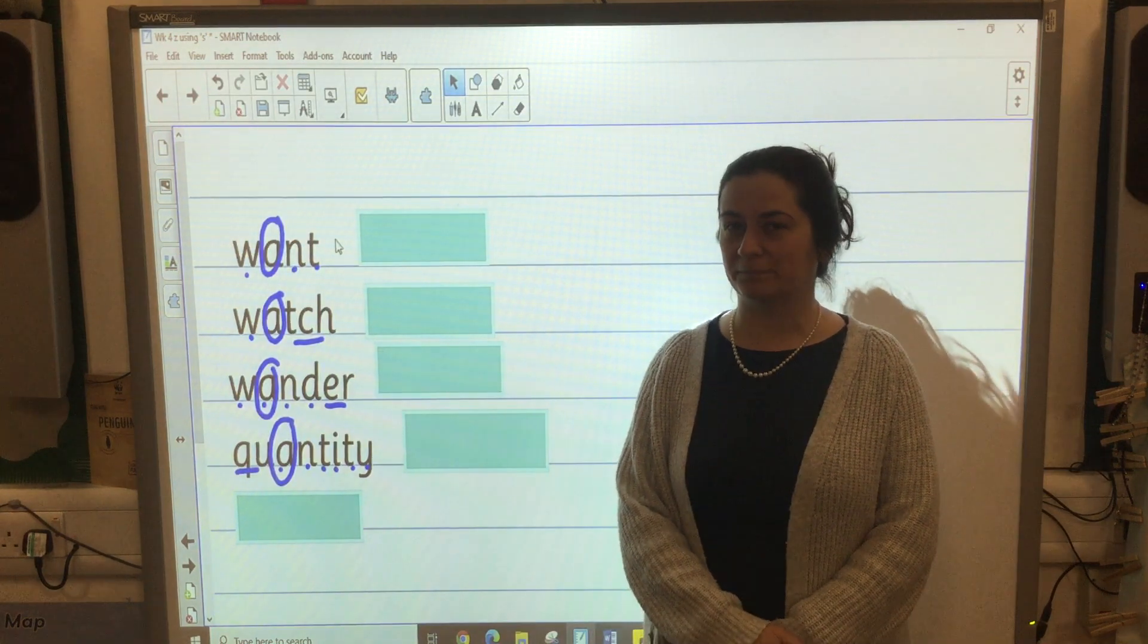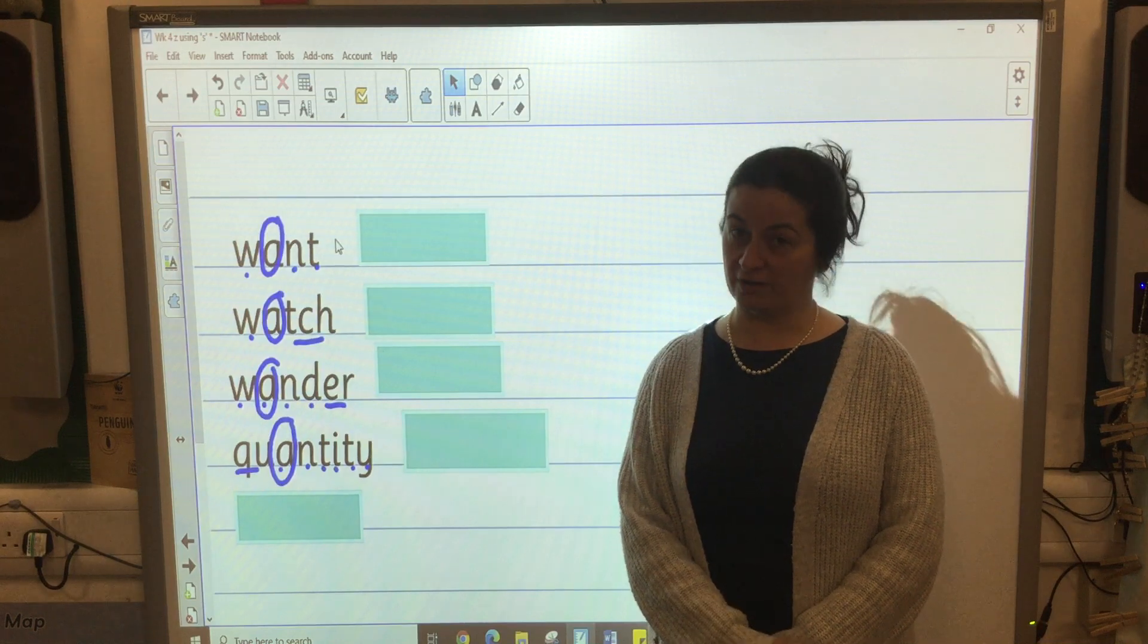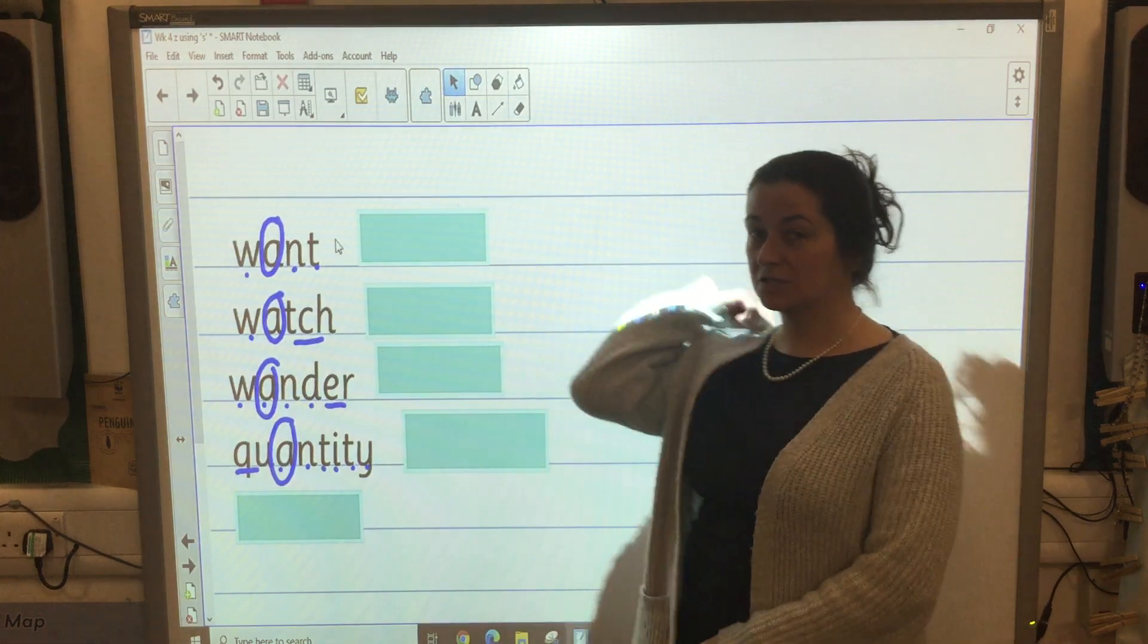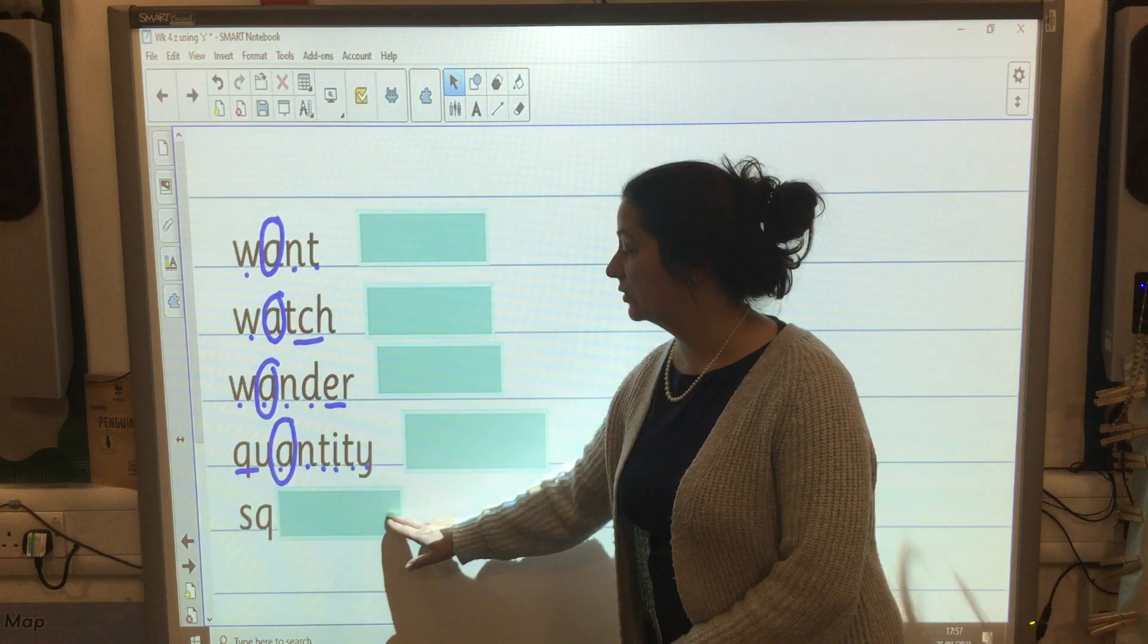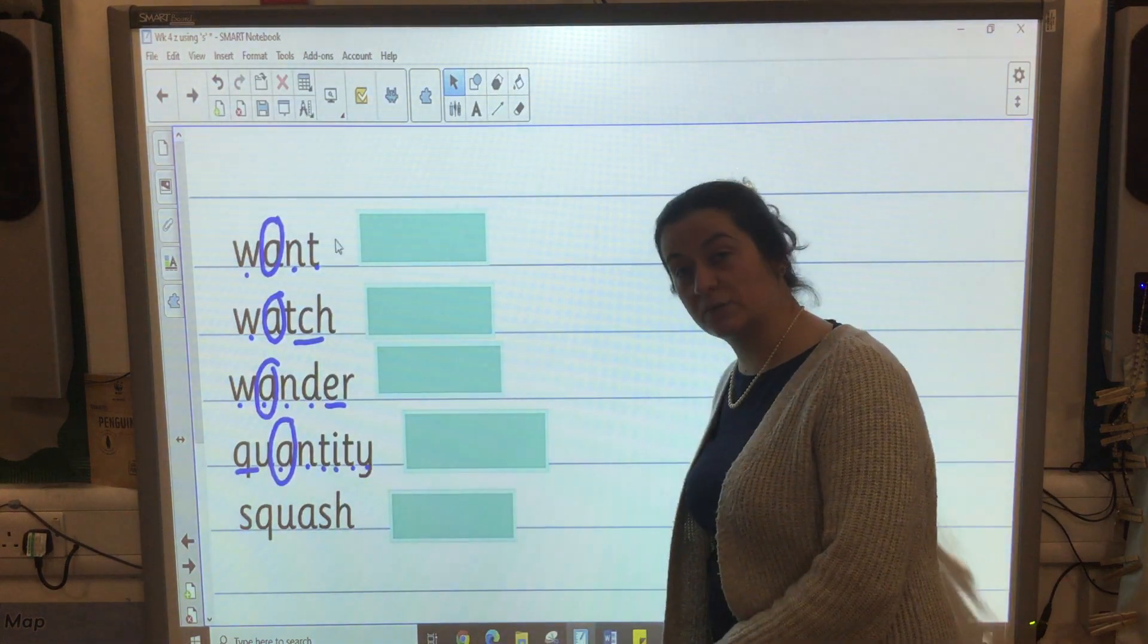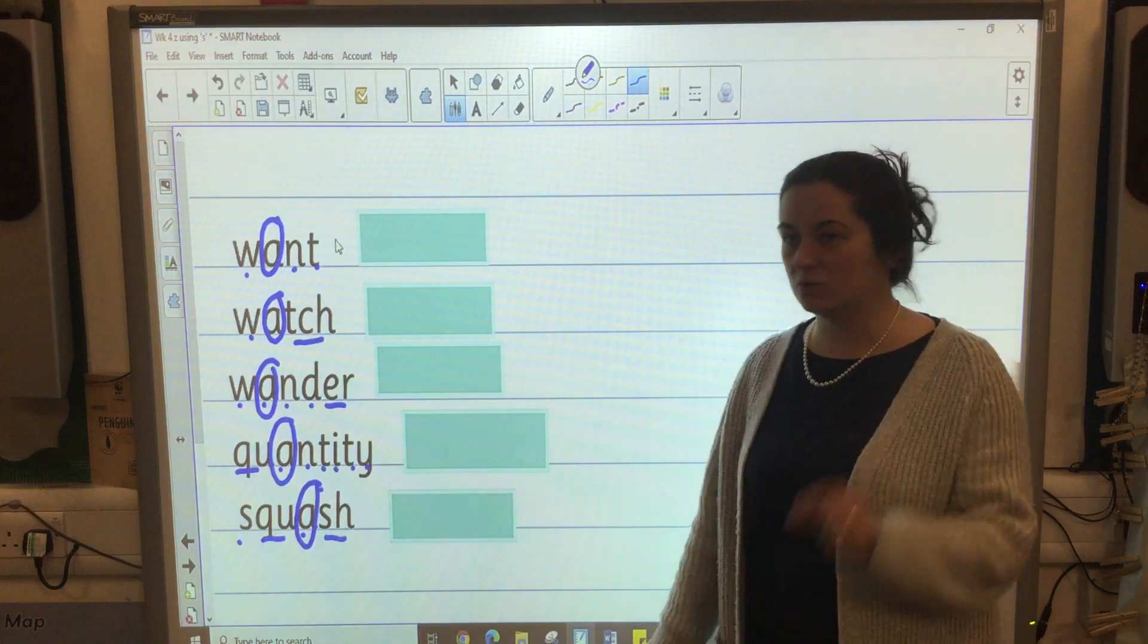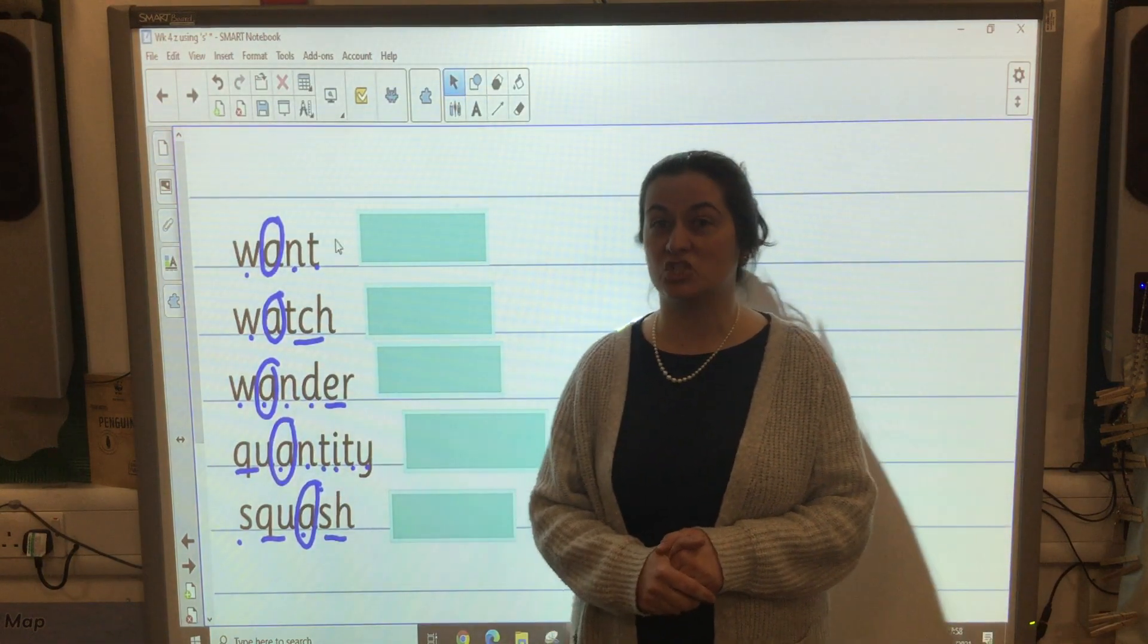So let's see if you can get the last one. Squash. I like to drink orange squash but lemon squash is my favorite. Squash. Check and change. S-q-u-a-s-h. Let's double check with the sound buttons. And there it is. But it's not tricky anymore is it? You know the spelling rule. Right. Let's get back to 'zh'.